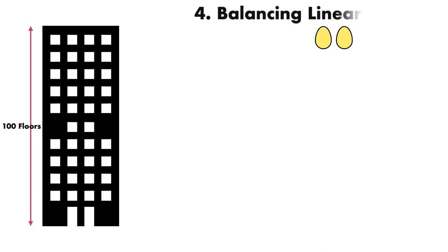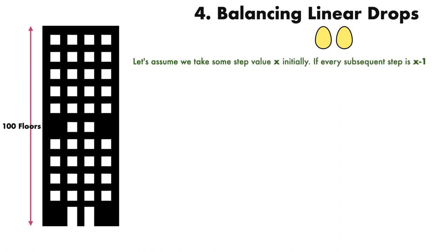Now let's get into the best solution. The next approach can reduce our worst case scenarios by balancing the linear drops and our floor drop increment. We are essentially trying to make all possible scenarios take the same number of drops to solve. We need to generalize the problem to have N floors. Let's assume we take some step value x initially; if every subsequent step is x-1, the linear portion of our strategy is x-1. So our drop count is x plus x-1.